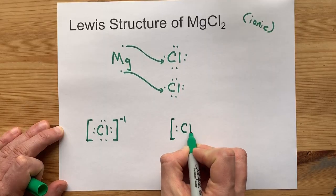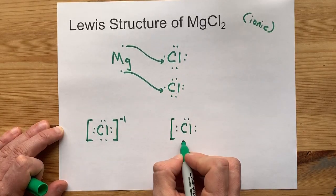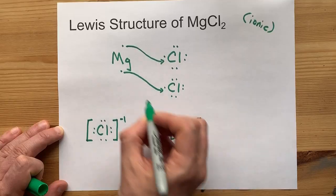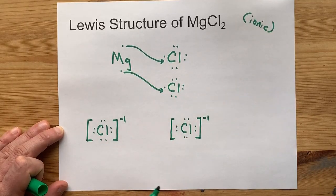You have to draw 2 of them because, well, you needed 2 CLs to absorb the electrons that magnesium was passing out for free over here.